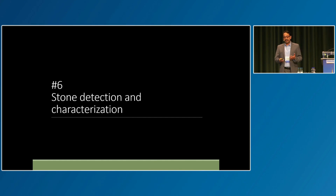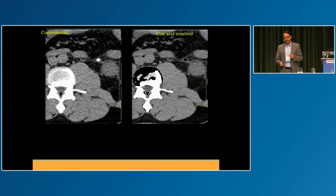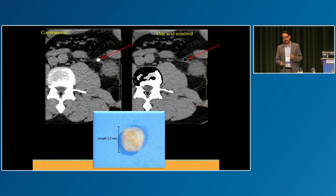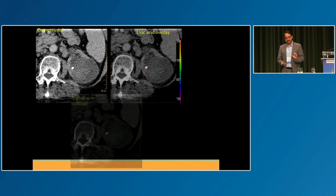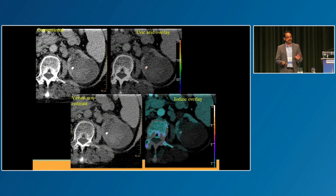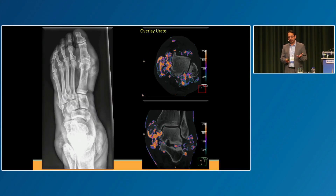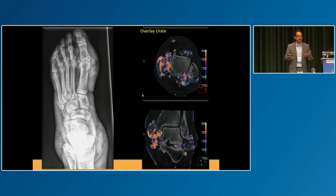Stone characterization is one of the oldest spectral CT applications. Here's a uric acid stone, nicely characterized and confirmed after extraction. This patient has a stone in the left kidney and a kidney mass — spectral CT shows the stone is uric acid and the mass is just a hemorrhagic cyst. This demonstrates how spectral CT can be a one-stop shop in emergency imaging. We can also characterize uric acid deposits in gout and make really pretty pictures.